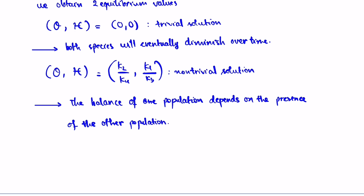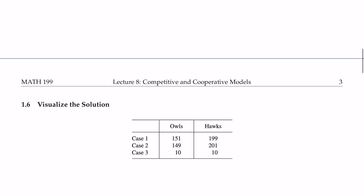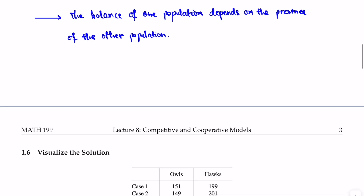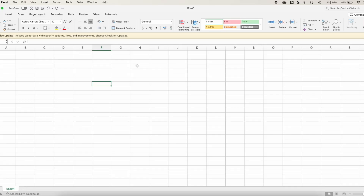We have two equilibrium values. Given some parameters, we're going to calculate the non-trivial solutions and see what the owl and hawk populations are. We'll also see how they change depending on initial values. Now we're going to visualize the solutions in Excel, running some simulations to visualize the results of the system.